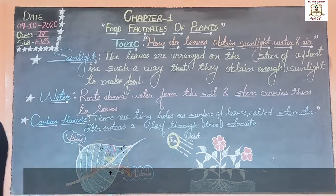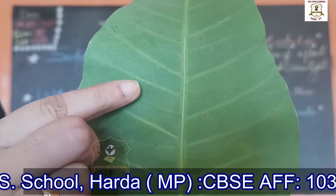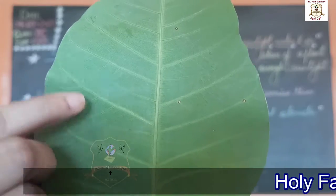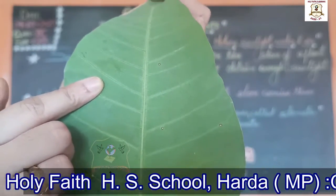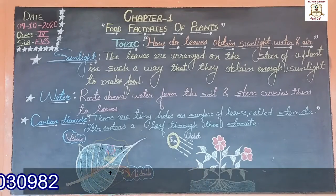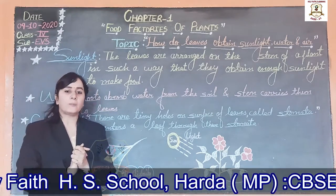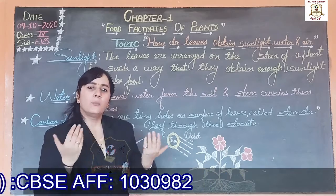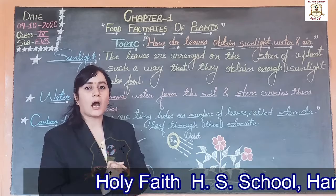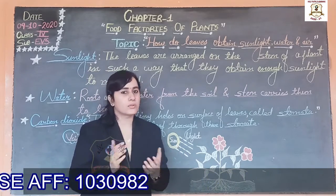Let us see. There are many tiny holes in a leaf. Air enters through these stomata. The leaves absorb carbon dioxide gas present in the air to make food, and the leaf gives out oxygen and excess water through these stomata.